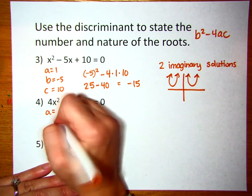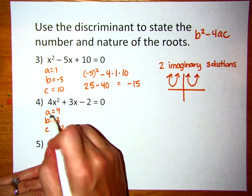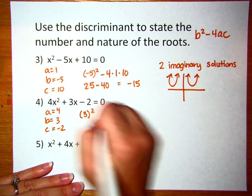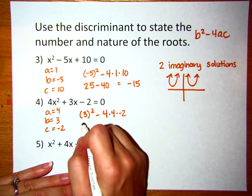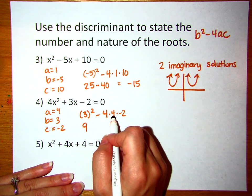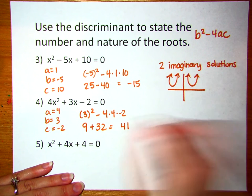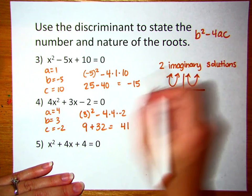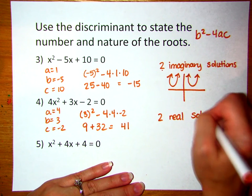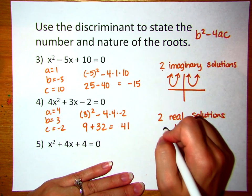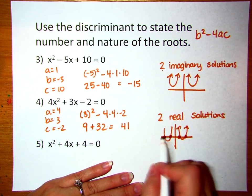Let's try the next one. a equals 4, b equals 3, and c equals negative 2. We plug in: b squared is 3 squared, minus 4 times 4 times negative 2. So 3 times itself is 9. Negative 4 times 4 is negative 16; negative 16 times negative 2 is positive 32. So our discriminant is 41, which is a positive answer. With a positive discriminant, that means we have two real solutions — the parabola crosses the x-axis in two places.